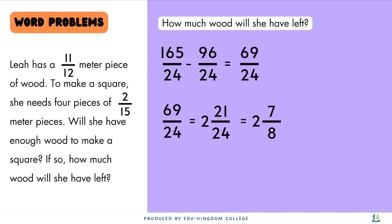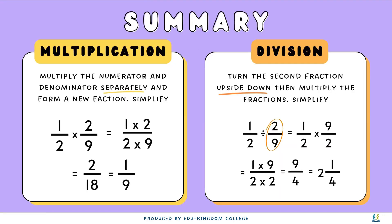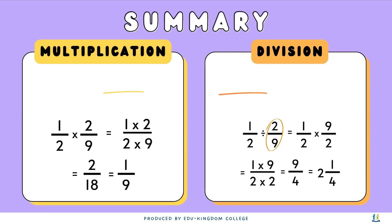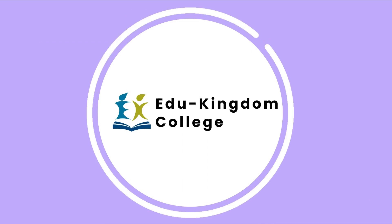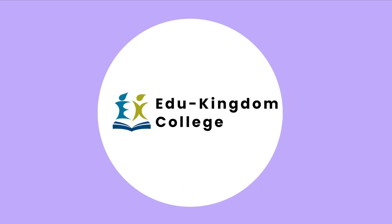Just a quick summary: for multiplication of fractions, multiply the numerator and denominator separately, form a new fraction, and simplify if needed. For division of fractions, turn the second fraction upside down, then multiply as learned, and simplify if needed. That's it for this video — check out more English and maths content by exploring our channel.